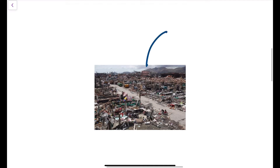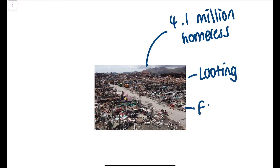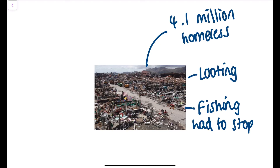Moving on to secondary effects, 4.1 million people were made homeless from this tropical storm — a significant amount. In addition, looting took place as people took advantage of abandoned buildings. The fishing industry also had to stop, which is a main source of income for a lot of locals in the Philippines.